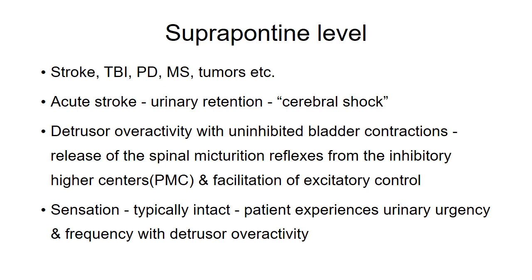Suprapontine lesions are usually seen in conditions like stroke, traumatic brain injury, Parkinson's disease, multiple sclerosis, tumors, etc. In acute stroke, there will be urinary retention due to cerebral shock. After cerebral shock disappears, there will be detrusor overactivity with uninhibited bladder contractions, due to release of spinal micturition reflexes from inhibitory higher pontine and micturition centers and facilitation of excitatory control. The sensory system is usually intact; patients experience urinary urgency and increased frequency.